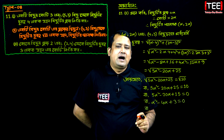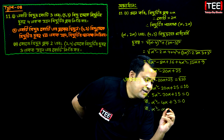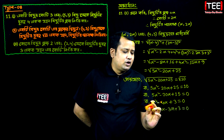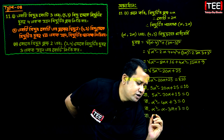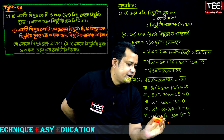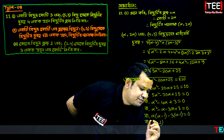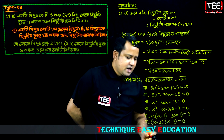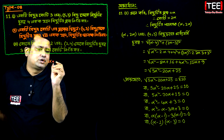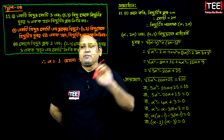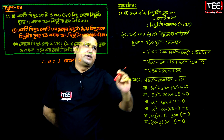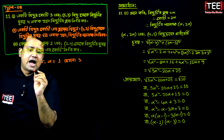So we have root r square minus 2 alpha minus 3 alpha plus 3 is equal to 0. So we have root r square minus alpha minus 3, all multiplied, minus 1 is equal to 0. So we have root r square minus 8 is equal to 0.